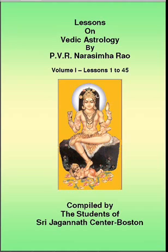The tenth house is your achievement and the sixth house is the process of overcoming enemies. If the sixth lord is debilitated and the tenth lord is exalted, that is Jaya Yoga. Even if the tenth lord is in his own sign or Mooltrikona, you still get the results of Jaya Yoga. Basically: sixth lord weak and tenth lord strong gives Jaya Yoga, meaning victory over enemies.